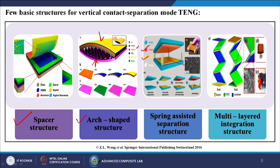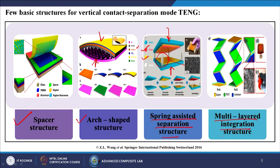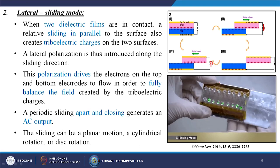There is also a spring-based separation structure — known as the spring-assisted separation structure — where you put the load on it and when you release the load or pressure, it automatically returns to its original position. Finally, there is the multilayered integration structure, where you stack layers and repeatedly press and pull in a vertical contact manner.